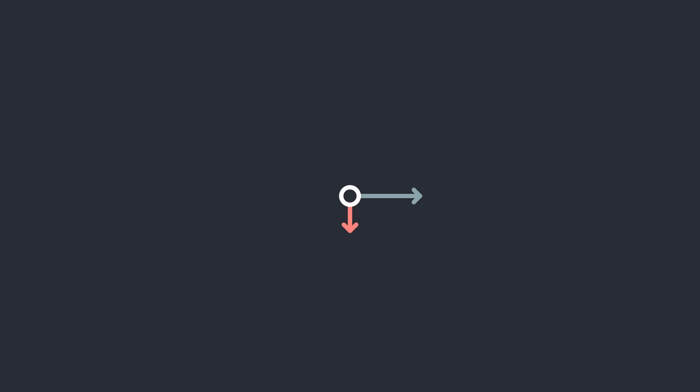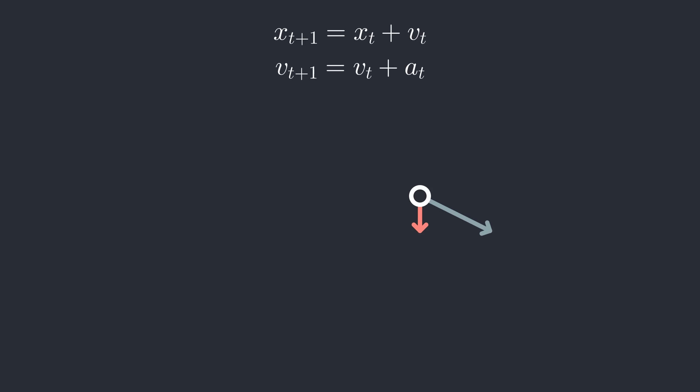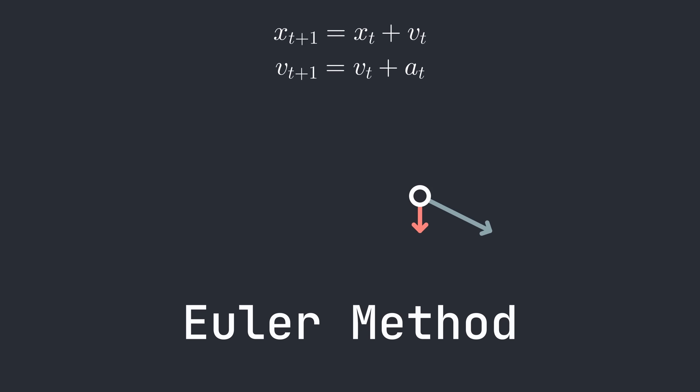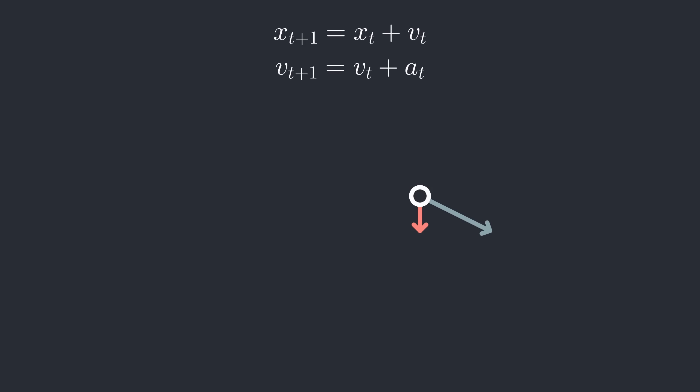First, we need to discuss some basic physics. Let's consider a single point. For our starting parameters, we know the current position of this point, and let's also assume it has some velocity toward the right and is accelerating downwards due to gravity. To find where the point goes in the next time step, we can add the velocity to the position, and the acceleration to the velocity. This is Euler's method of solving the equations of motion, and it produces a convincing, though slightly inaccurate, approximation of motion.